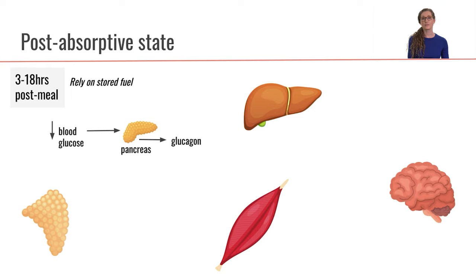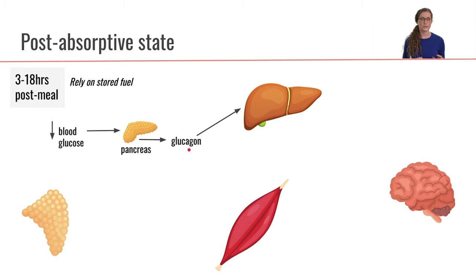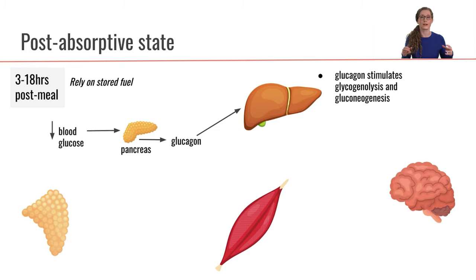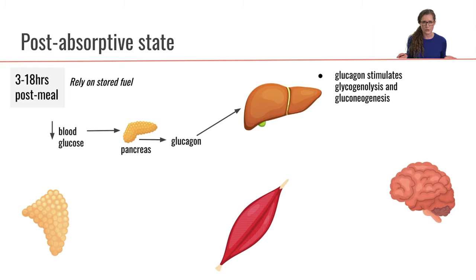That decrease is going to stimulate alpha cells in the pancreas to secrete the hormone glucagon. Glucagon is going to stimulate the liver to perform glycogenolysis — to break down glycogen into individual glucose molecules — that the liver will then release into the bloodstream to help bring our blood glucose concentration back up to a nice stable level.